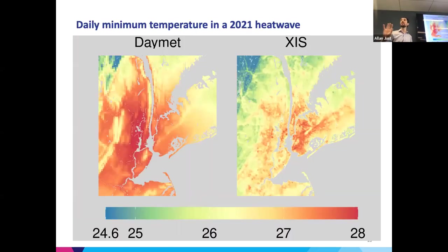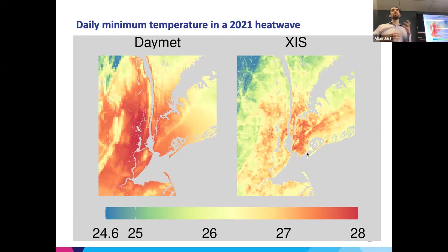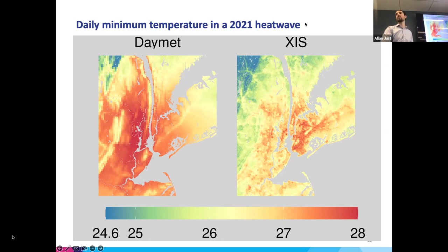We see a much lower mean squared error than each of these models. As a visualization, this was one of the warmest days in 2021 in the New York area. On the left you see the one-kilometer Daymet model, and on the right you see the map we're able to produce, making predictions on any arbitrary grid we want at a finer grid to look at the variation. You have a combination of effects related to higher accuracy, and then there can be resolution effects.